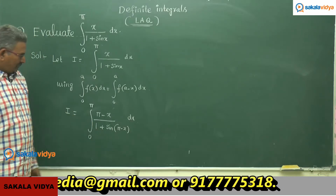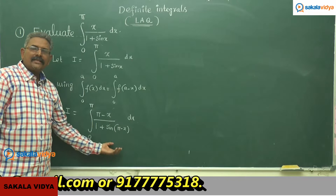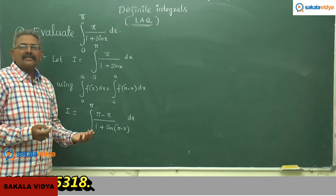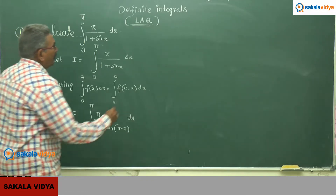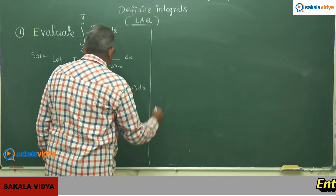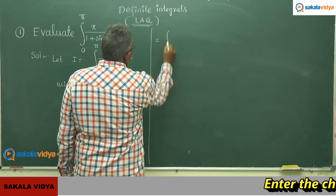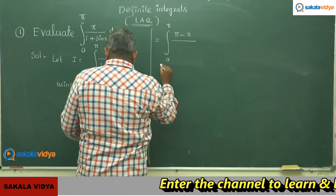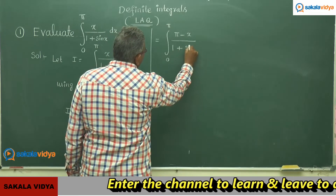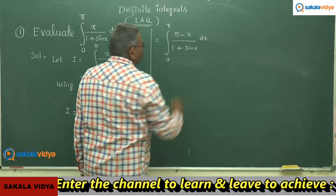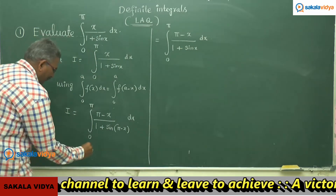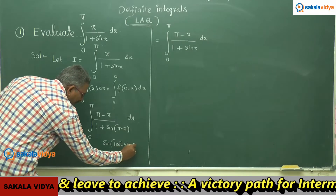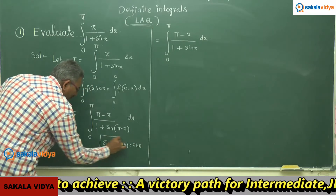For better understanding, let us discuss the value of sin(π − x), which is nothing but sin(180° − θ). Sin(180° − θ) equals sin θ. Applying this formula, the integral becomes: I equals integral from 0 to π of (π − x) divided by (1 + sin x) dx.